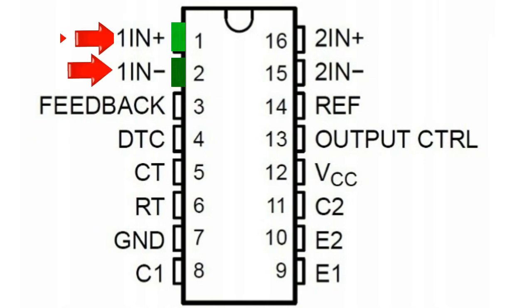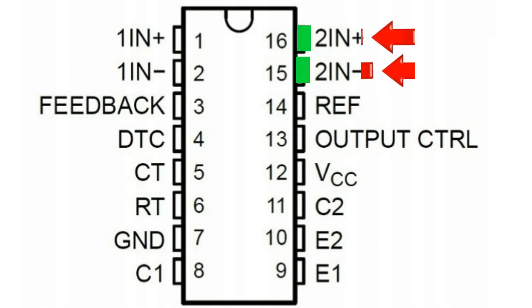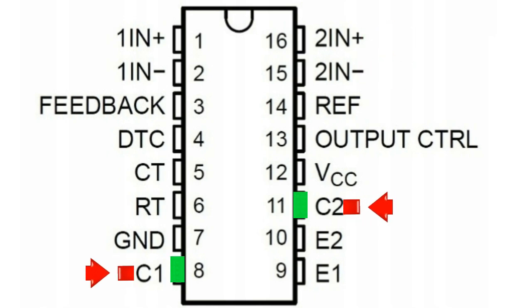Pin descriptions: these are the non-inverting and inverting inputs of error amplifier op amp 1 and op amp 2. These are outputs 1 and 2 of the IC which connect with the collectors of the respective internal transistors. This pin needs to be connected with an external capacitor for setting the oscillator frequency. It's the input of the internal op amp which controls the dead time operation of the IC.